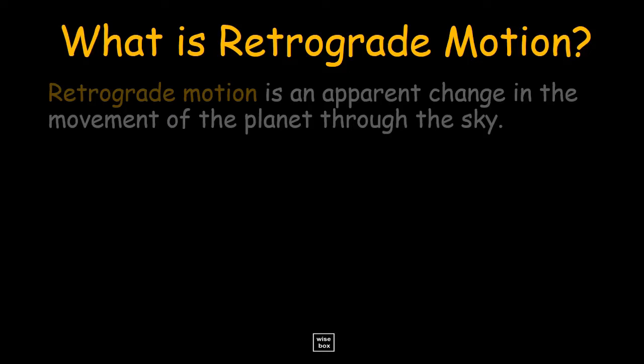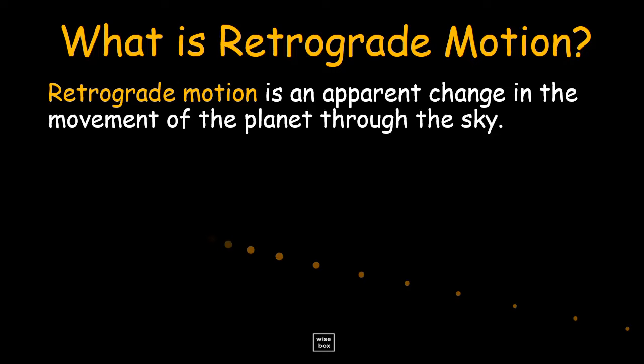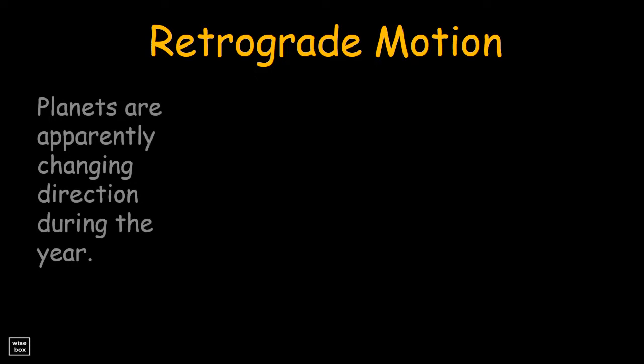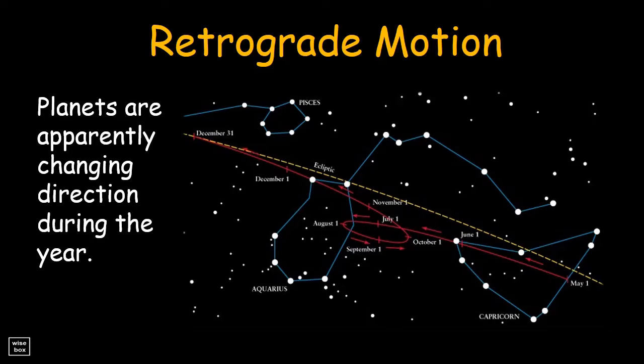Retrograde motion is an apparent change in the movement of the planet through the sky. From night to night they gradually drifted in the sky relative to the stars, generally toward the east, but occasionally they stop their eastward motion and reverse direction, moving toward the west. The planets are apparently changing direction during the year. This phenomenon can be observed by the Greeks, but they still do not know how to explain this.